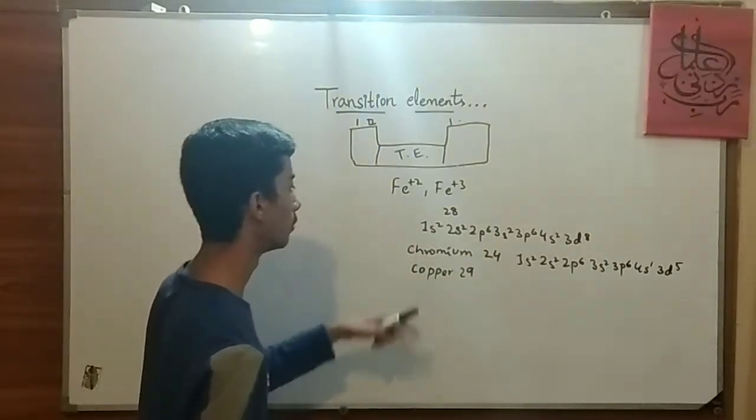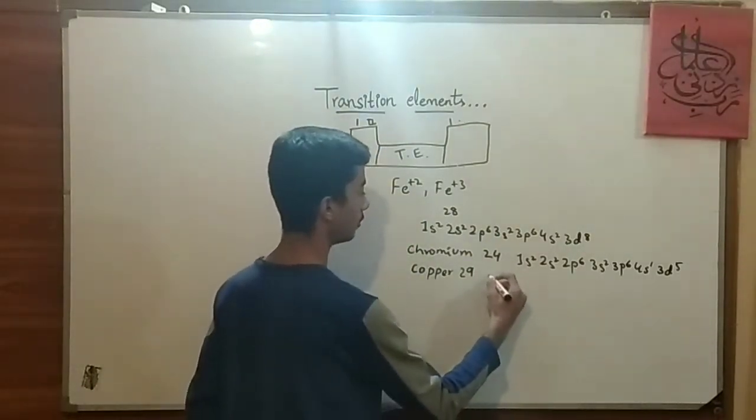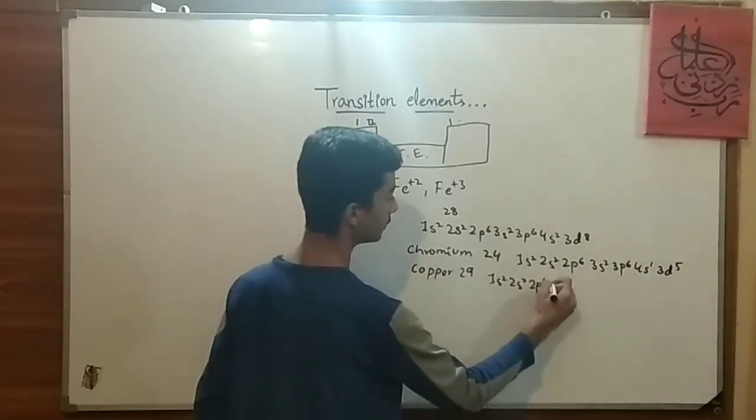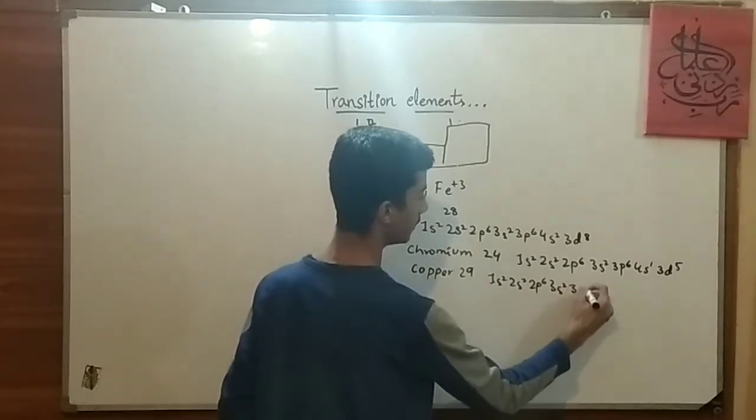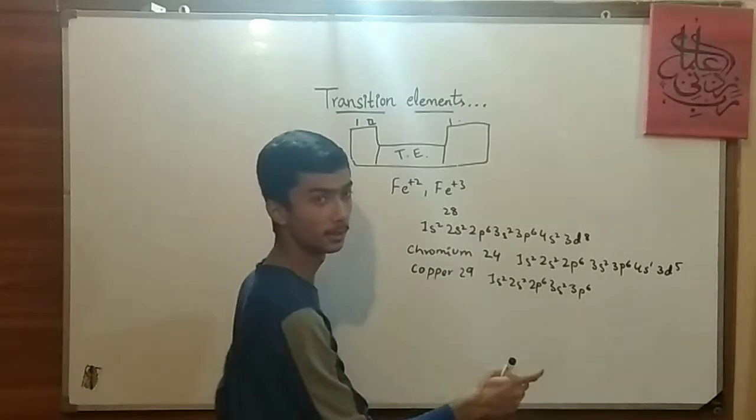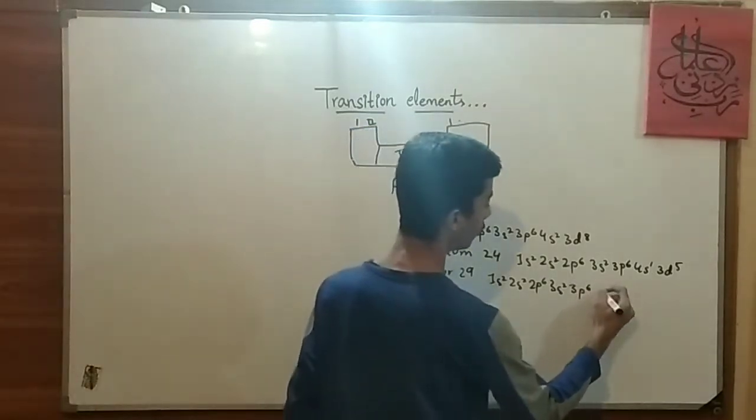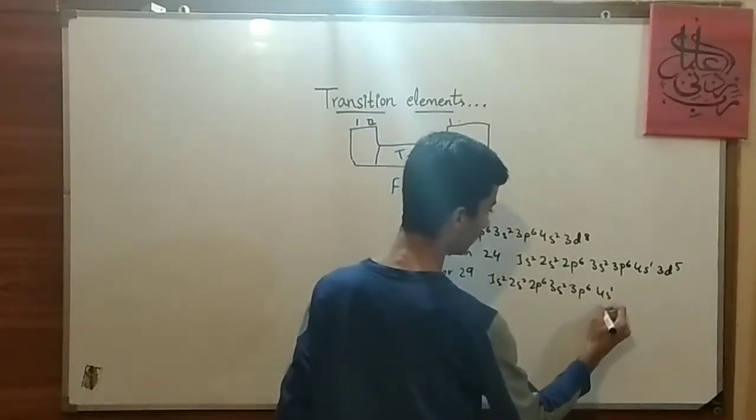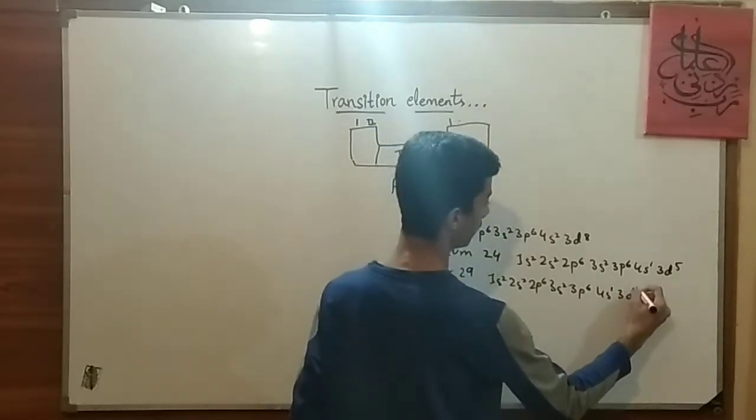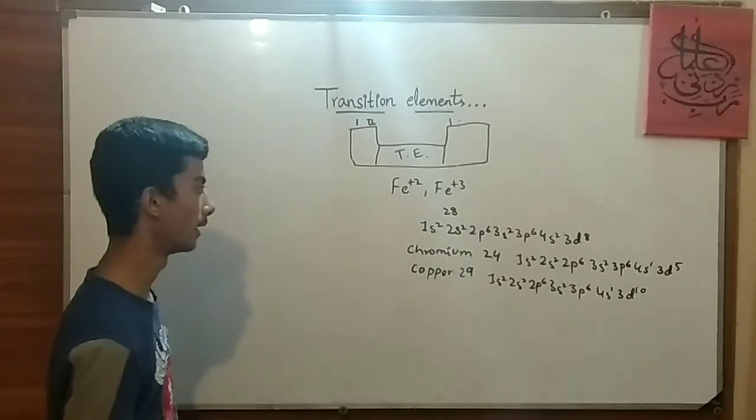And same for copper. It would be 1s2, 2s2, 2p6, 3s2, 3p6, which is 2, 4, 10, 12, 18, and after 18 it would be 4s1 again, which would be 19, and then it would be 3d10. This is how we are going to fill out the copper 29.